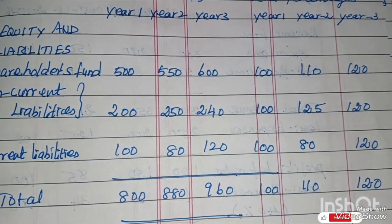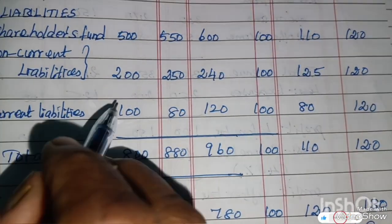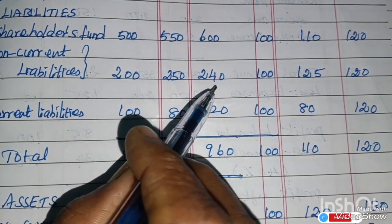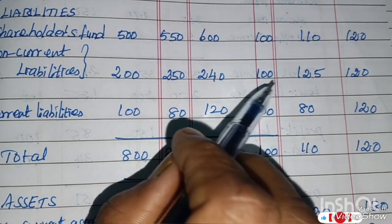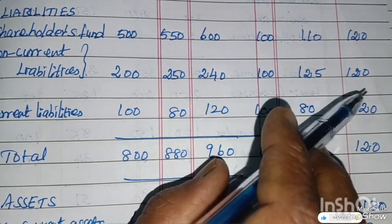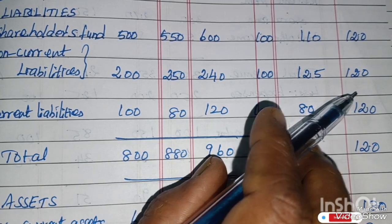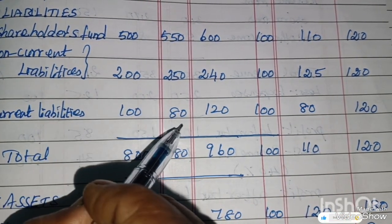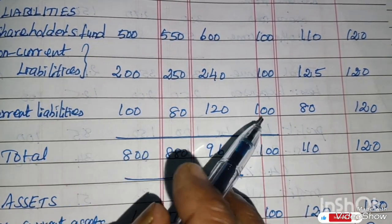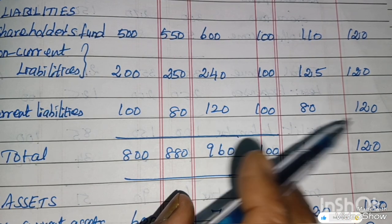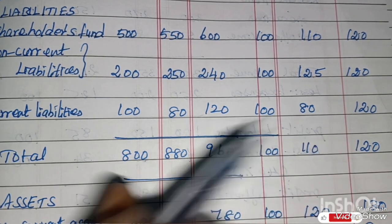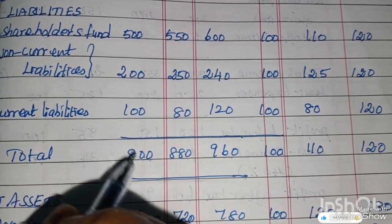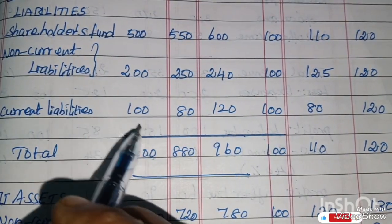Non-Current Liabilities — 200, 250, 240. Trend percentages: 100, 125, 120. Current Liabilities — 180, 120. Percentage: 100 for Year 1. Total liabilities — Year 1: 800 (500 + 200 + 100), Year 2: 880 (550 + 250 + 80), Year 3: 960.